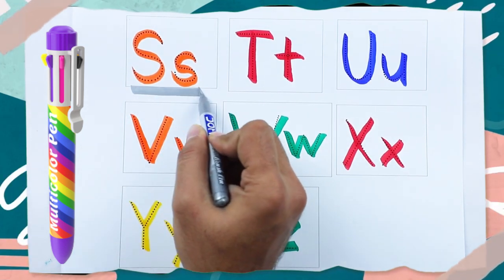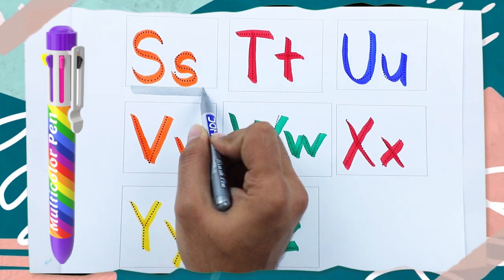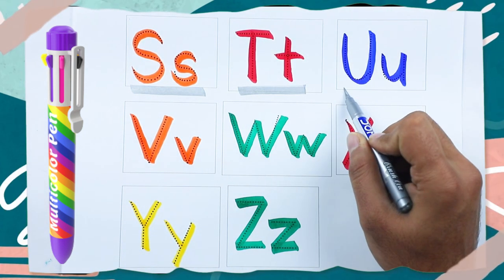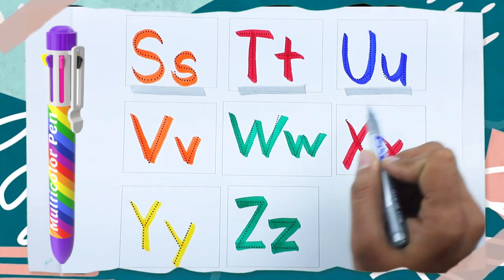Orange color S, S for Sea, Red color T, T for Tiger, Blue color U, U for Umbrella.